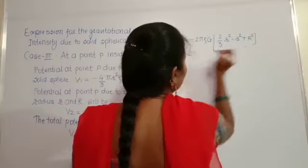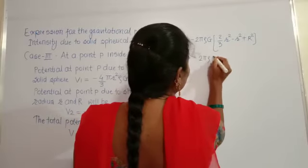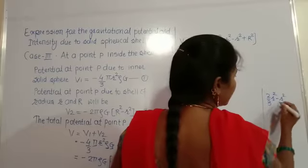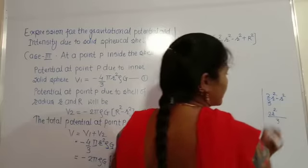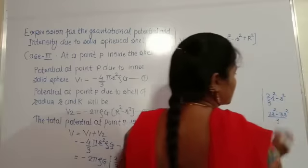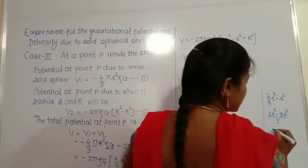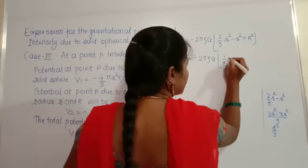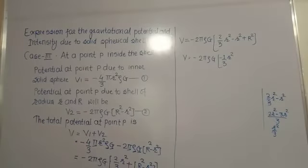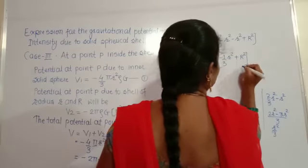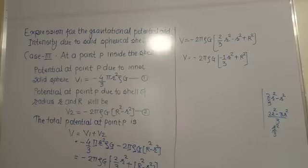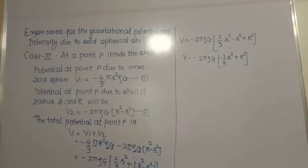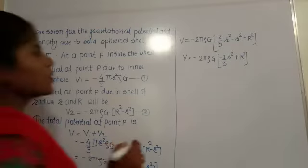Taking LCM of the r² terms — LCM is 3 — we get 2r² for the first term and 3r² for the second, so 2r² − 3r² = −r², giving −r²/3. Therefore the bracket becomes (−1/3)r² + R², and: V = −2πρG × [−(1/3)r² + R²].